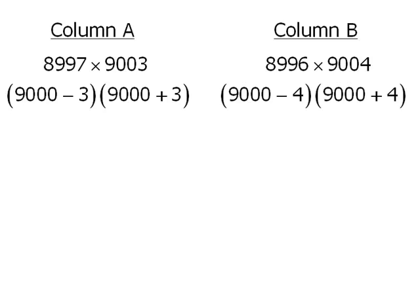The product of column A will be a difference of squares — it will be equal to 9,000 squared minus 3 squared, or 9. Column B will also be a difference of squares — it will be 9,000 squared minus 4 squared, or 16.